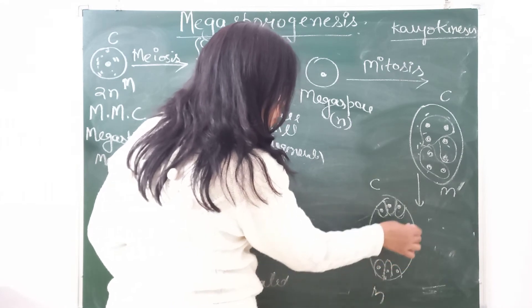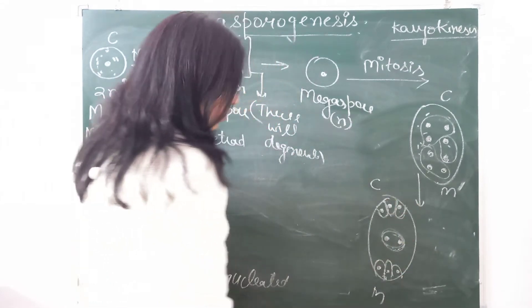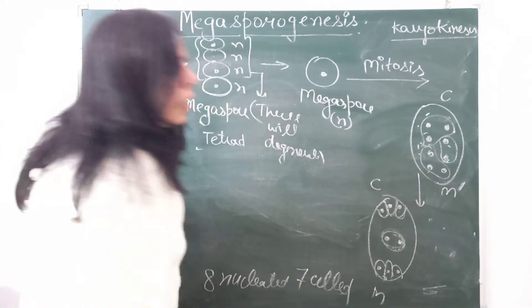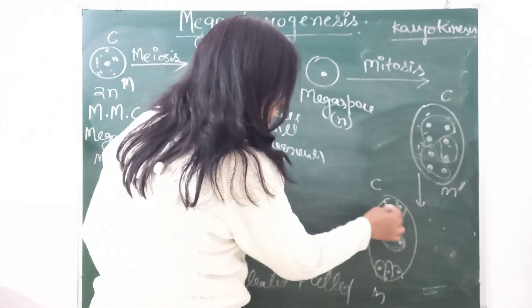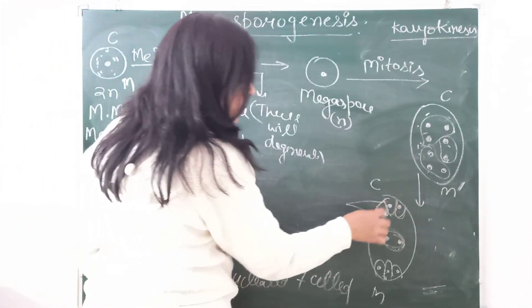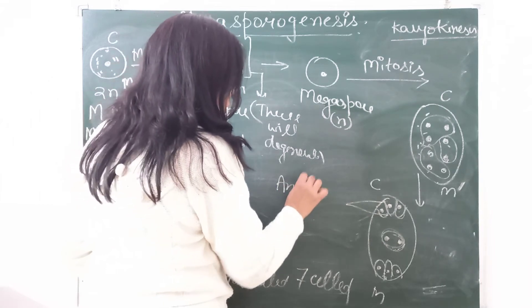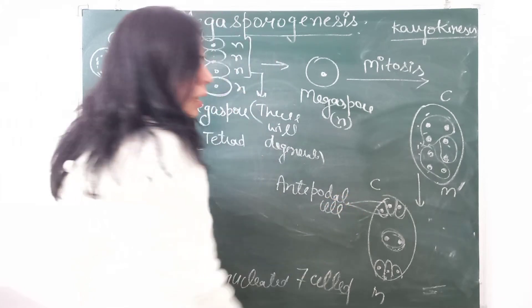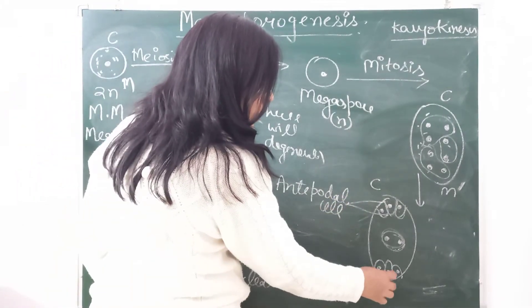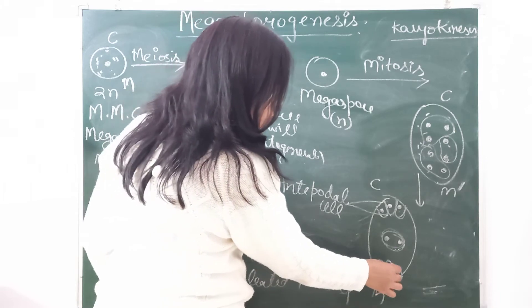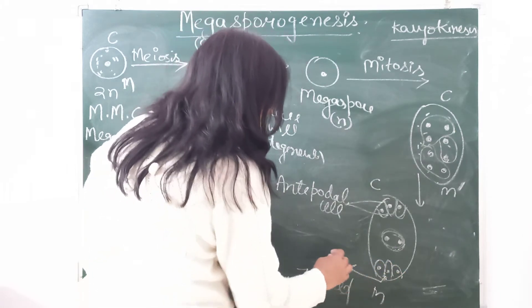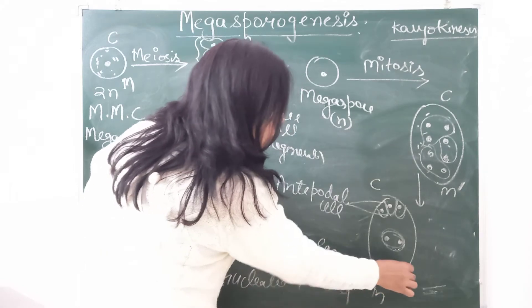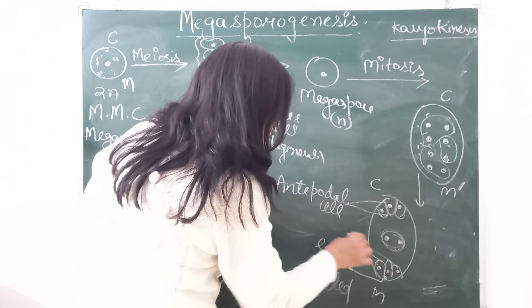Now count the cells: one, two, three, four, five, six, and this complete cell, that is seven cells. So eight nuclei but how many cells? Seven cells are formed. Let me label these cells. These three cells towards the chalazal end are known as antipodal cells, and three cells towards this micropylar end. The central cell is known as egg, and these two cells which are on the sides are known as synergids.